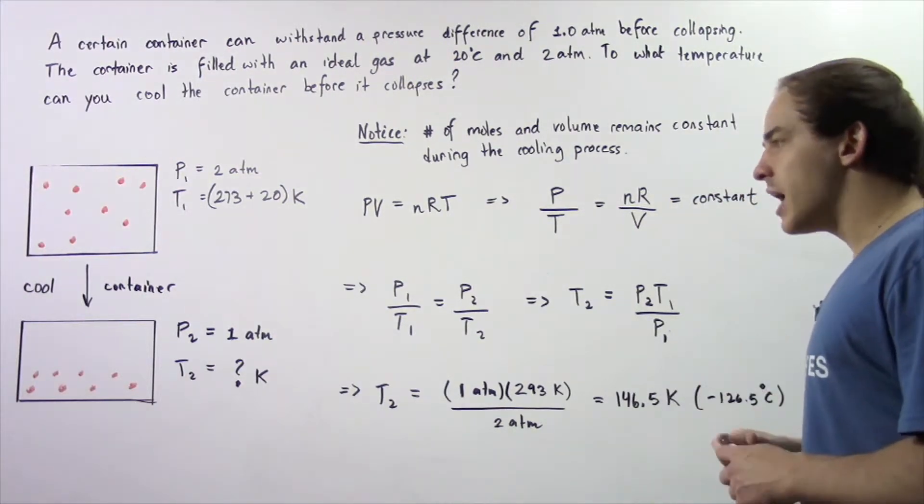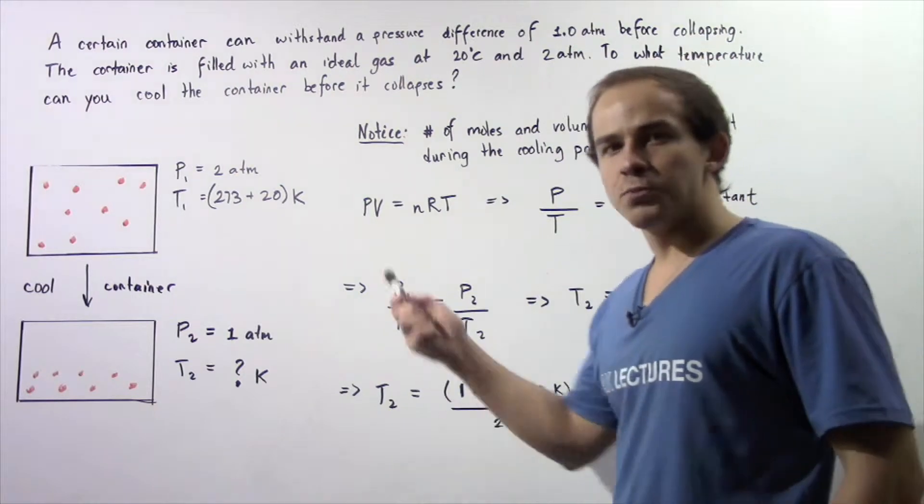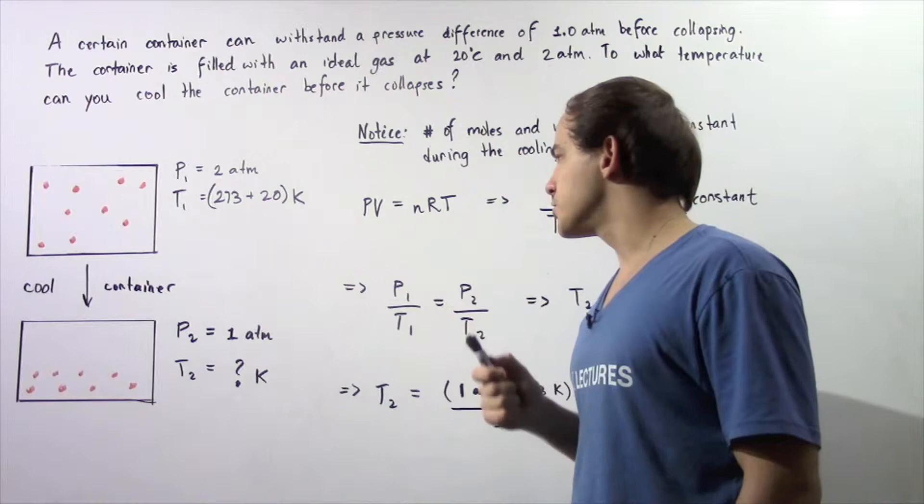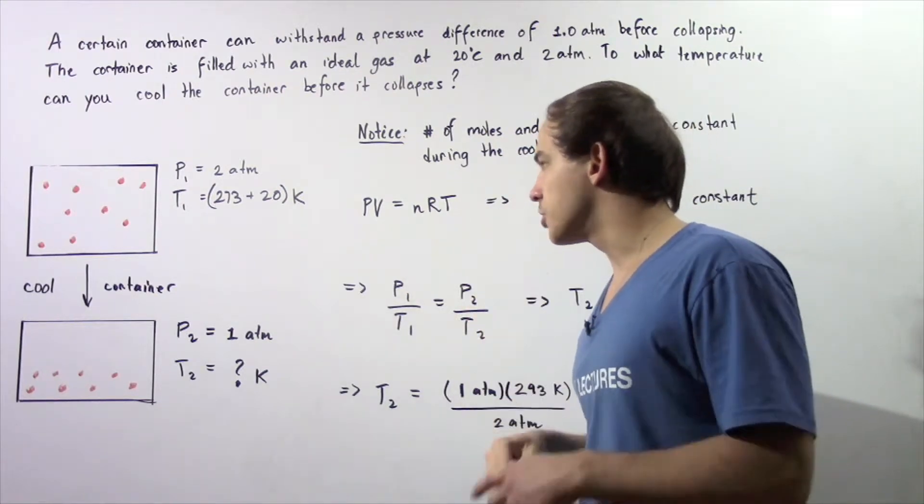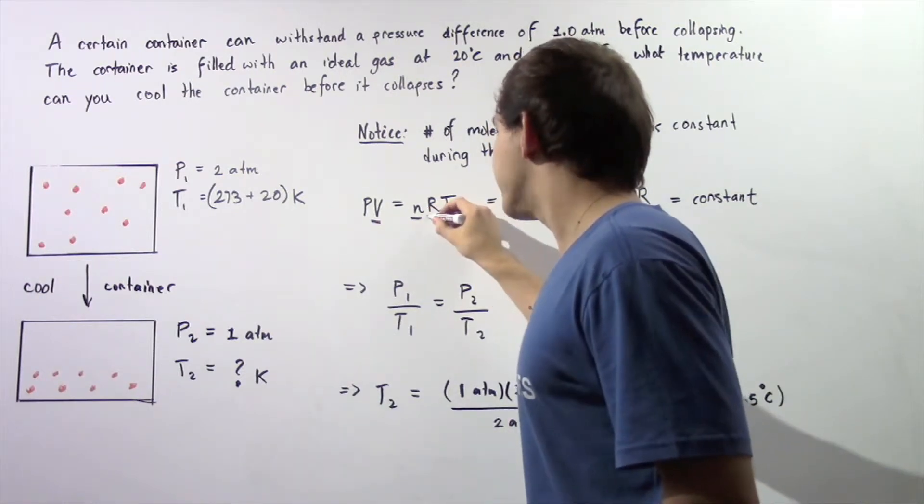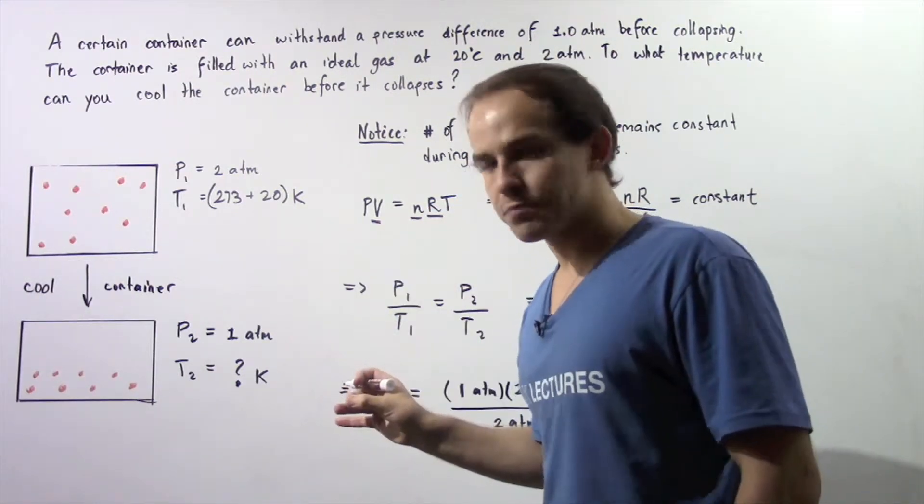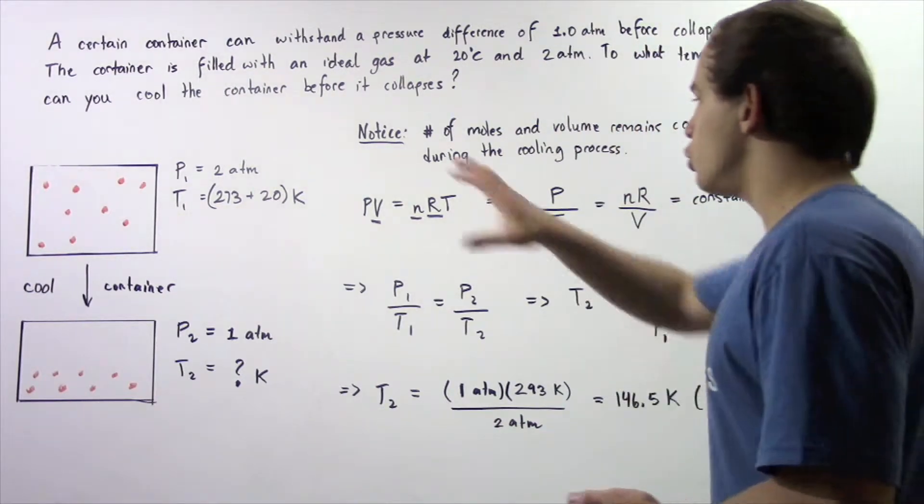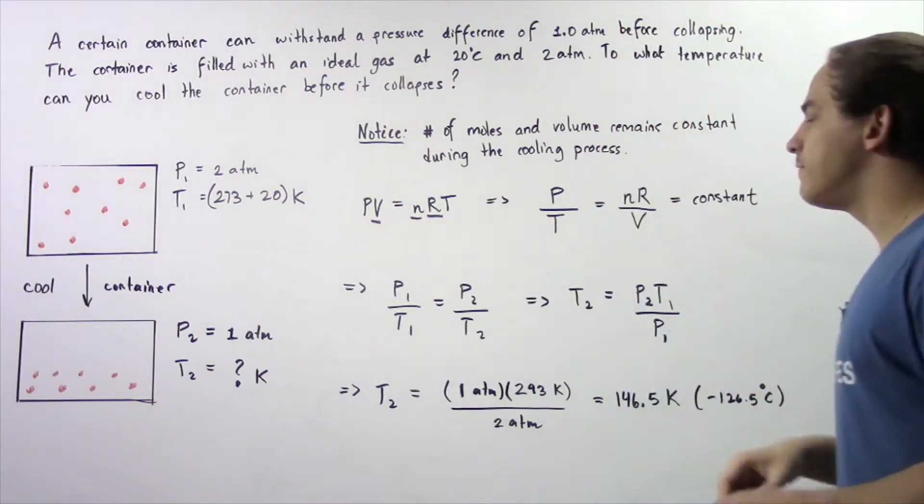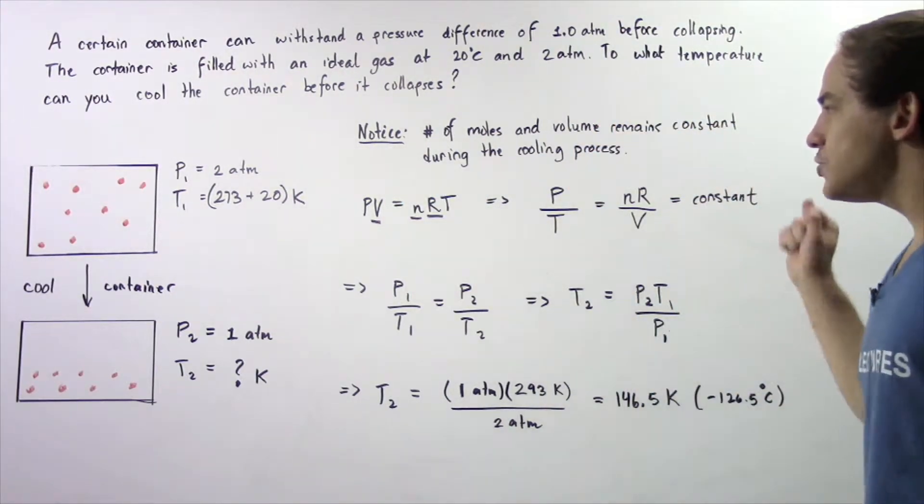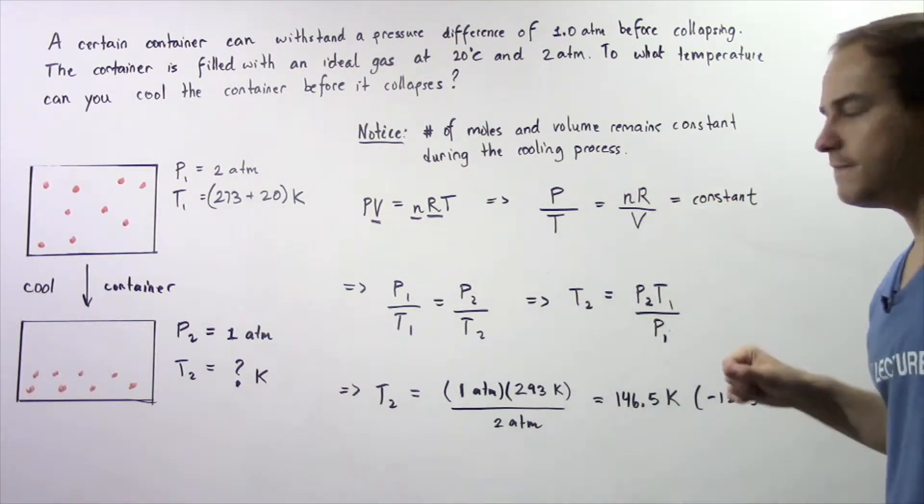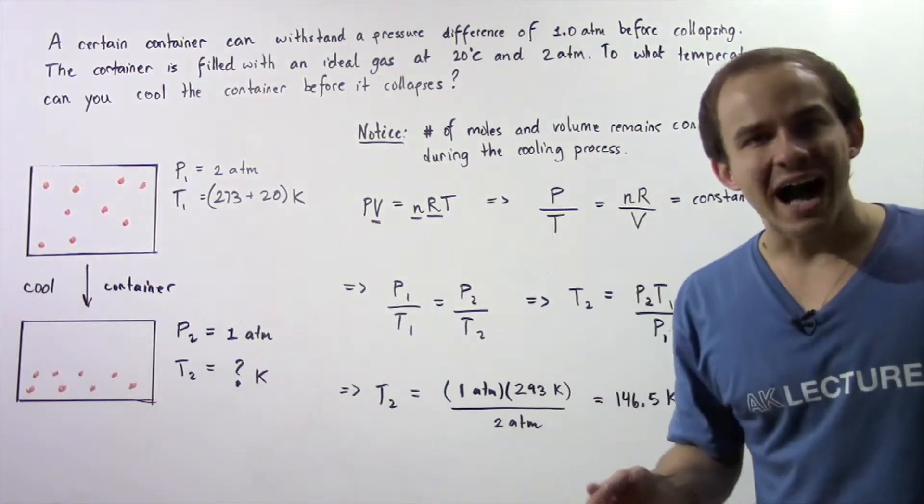Let's apply the ideal gas law. The product of pressure and volume is equal to the product of the number of moles, the universal gas constant, and the temperature. Notice that the volume, the number of moles, and our gas constant are all constants. Let's bring our constants to the right side and everything else to the left side. The ratio of pressure to the temperature is equal to nR divided by V. Now this entire ratio is a constant, so that means P divided by T is also constant.